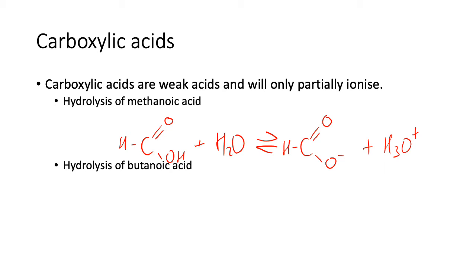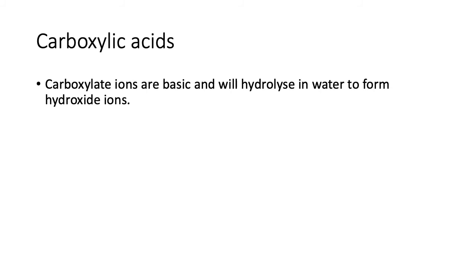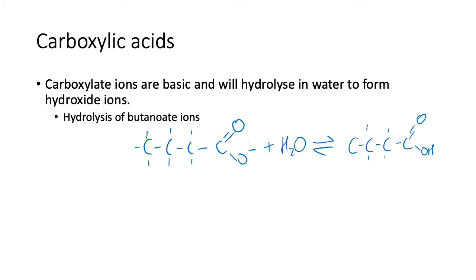Carboxylate ions are basic and will hydrolyze in water to form hydroxide ions because they are the conjugate base of a weak acid. Let's look at the hydrolysis of butanoate ions. Butanoate ion with water, double arrows, forms butanoic acid and hydroxide ions. It's going to hydrolyze water to make the carboxylic acid again and some hydroxide ions. You can try the hydrolysis of propanoate ions.